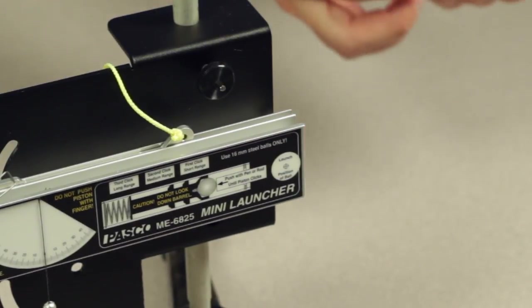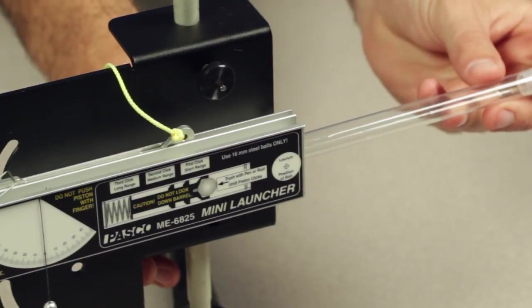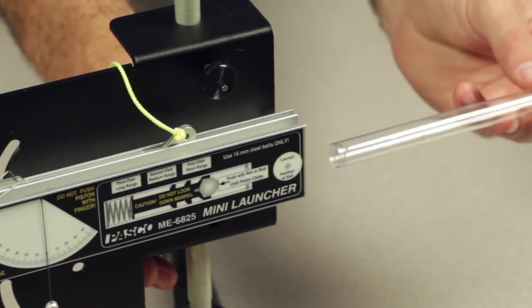To adjust the range of the launcher, simply use the push rod that comes with the launcher to press the projectile further into the barrel.